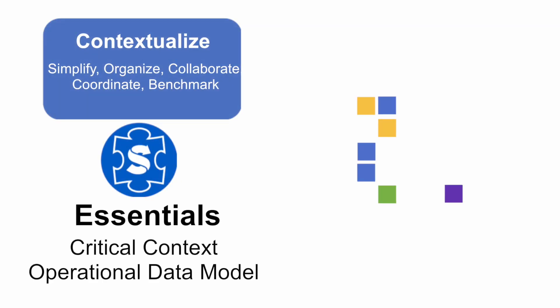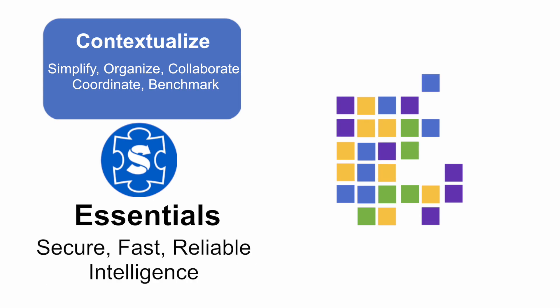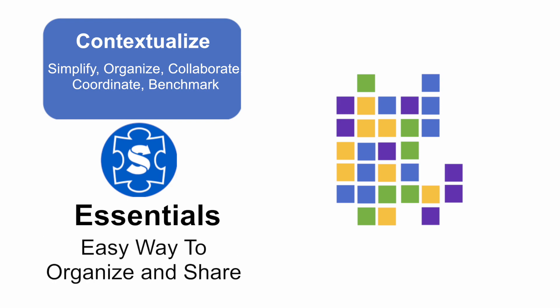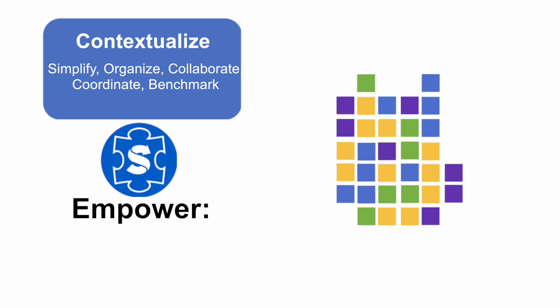The next step is to contextualize with Essentials, providing the critical context and the operational data model that creates the Framework for Digital Twins. It utilizes a vendor-neutral object model that obtains secure, fast, and reliable intelligence to all of your assets, providing an easy way to organize and share all of your data into an asset model — a single source of truth for all your data, regardless of vendor — with the critical context needed to empower collaboration, coordination, and benchmarking across the enterprise.